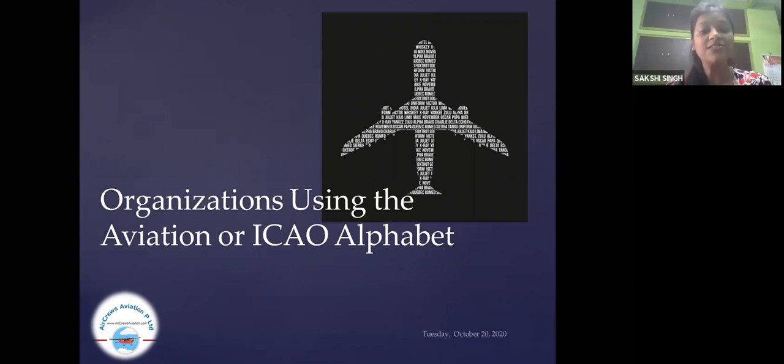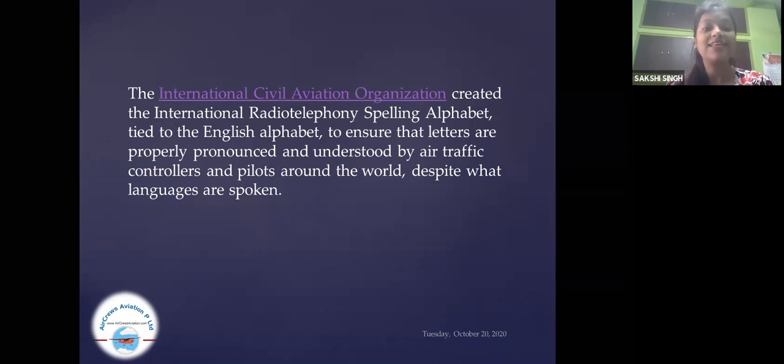Organizations using the Aviation or ICAO alphabet, the International Civil Aviation Organization created the International Radio Telephony Spelling Alphabet tied to the English alphabet to ensure that letters are properly pronounced and understood by air traffic controllers and pilots around the world, despite what languages are spoken.